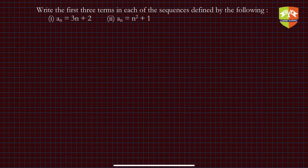Here goes the first problem: write the first three terms in each of the sequences defined by the following. Two sequences' nth terms are given. Let us take them one by one. For the solution, let's take one where a_n is given as 3n + 2, a very simple problem.